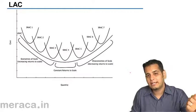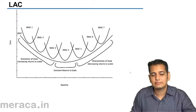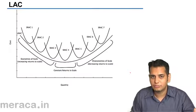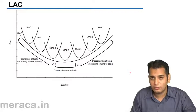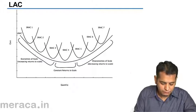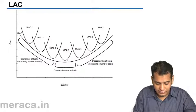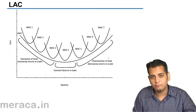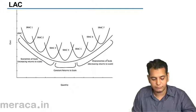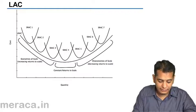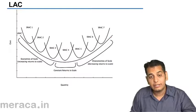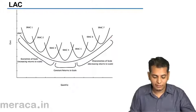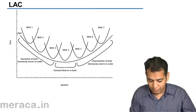It might be tangent at any point, not necessarily the lowest point, but it will be tangent to — it will be touching — all the short run average cost curves. Now in this case, we can see that the long run average cost curve is formed with the help of various short run average cost curves. Initially, the long run average cost curve is also U-shaped, just like the short run average cost curve.